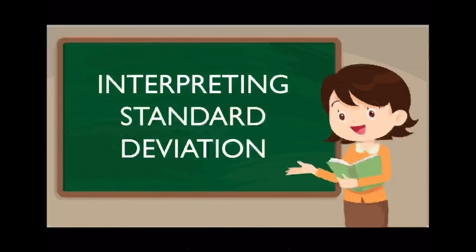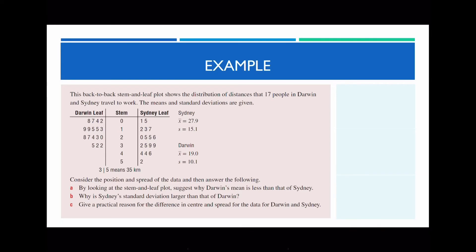What we're going to look at now is how to interpret standard deviation — this is a more minor component of today's lesson. I've got an example: a back-to-back stem-and-leaf plot showing the distribution of distances that 17 people in Darwin and Sydney travel to work. The means and standard deviations are given below. For Sydney, the mean distance is 27.9 kilometers and the standard deviation is 15.1 kilometers.